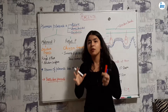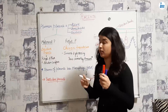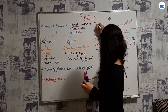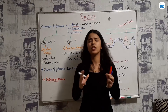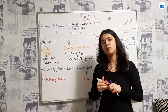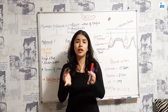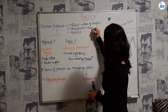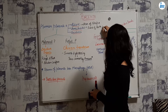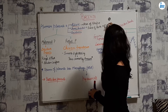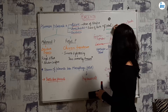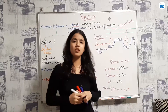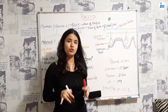It is called discoid because of the shape of the placenta. Hemichorial because the placenta has both maternal as well as a fetal part. And deciduous because after delivery it also sheds off.